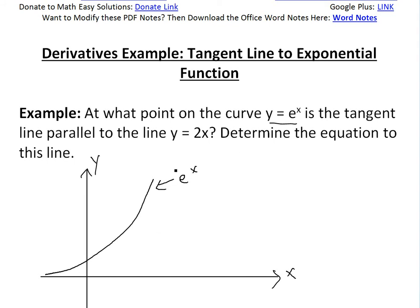If you want to find a line tangent to this curve parallel to the line y equals 2x, y equals 2x goes to the origin, so it looks something like this. Just imagine it being a bit straight, so this is 2x.